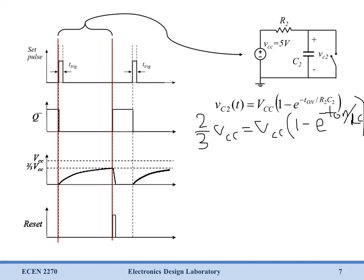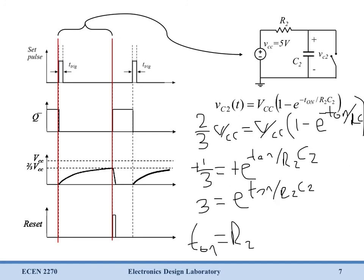Now at this point, we can simply cancel our Vccs. And we can throw a 1 onto the other side. So we'll subtract 1 from both sides. We're going to have minus one-third equals minus e to the t on over R2C2. Let's make both sides positive. Now we can flip both sides upside down so that we have 3 equals e to the positive t on over R2C2. Take the logarithm of both sides and multiply through by R2C2. Means that we know now that t on is going to equal R2C2 times the natural log of 3. And we can use this equation to solve for t on.